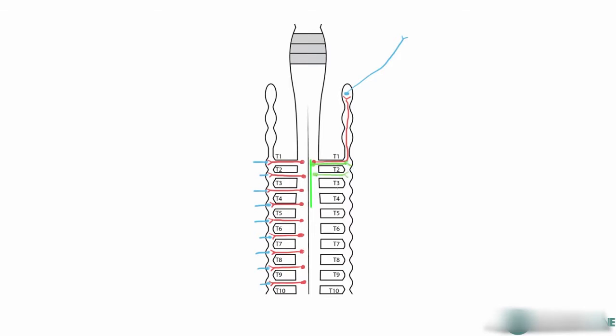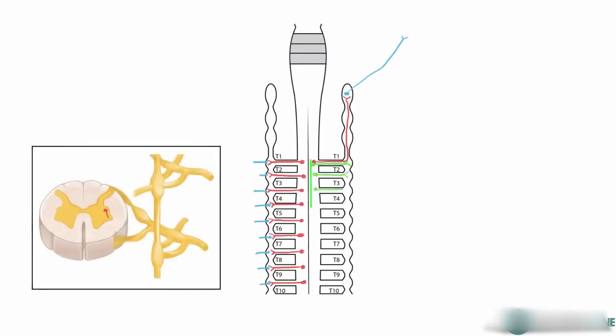The pre-ganglionic neuron for the thoracic organs enter the sympathetic ganglion, and instead of leaving by the grey ramus and along the spinal nerve like the somatic supply, they leave in their own nerve. Remember that autonomic nerves that take off on their own like this, without travelling in a spinal nerve, are known as splanchnic nerves.